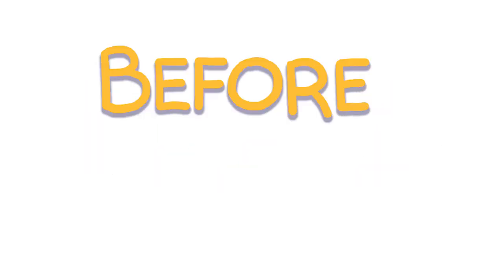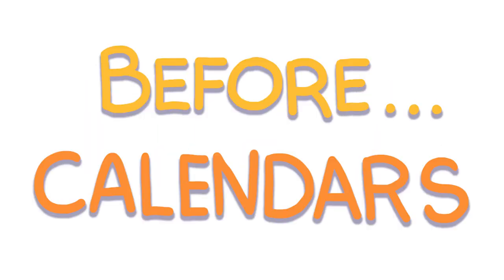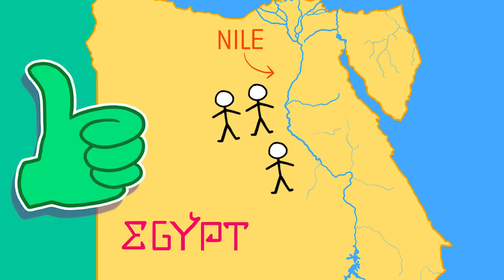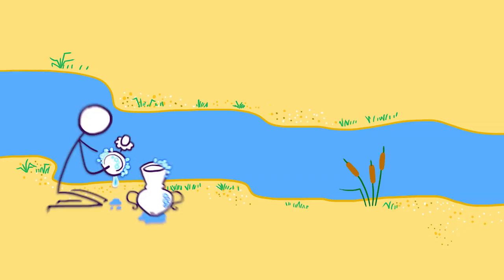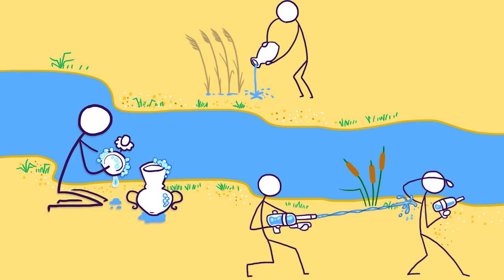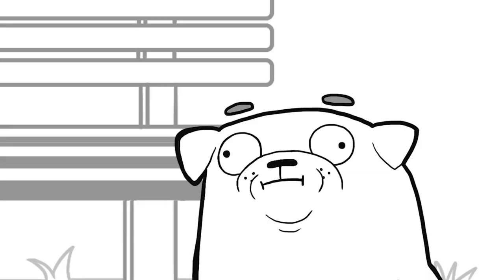7500 BC. BC? Before calendars. Wow, so a really long time ago. Humans first arrived at the Nile, which is a river in Egypt. It's a good place to be because they can use the river water for washing and making food grow, or whatever it is humans do with water.